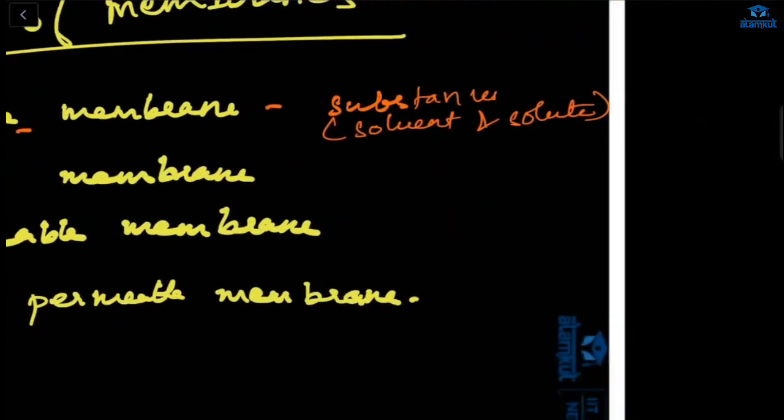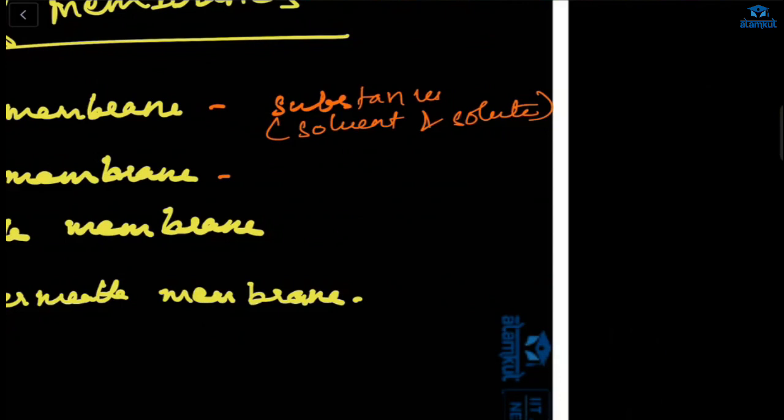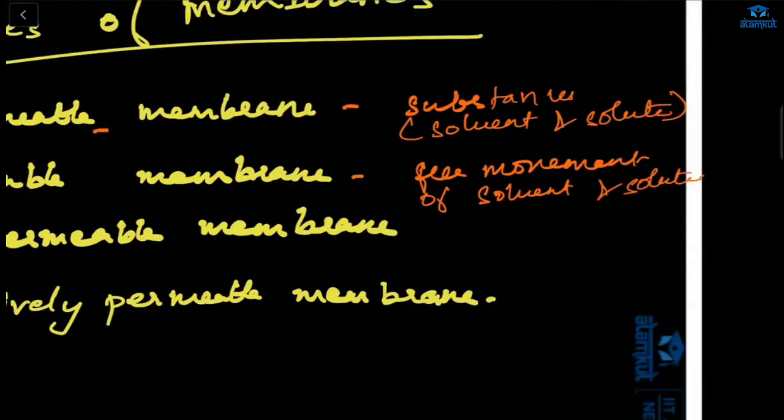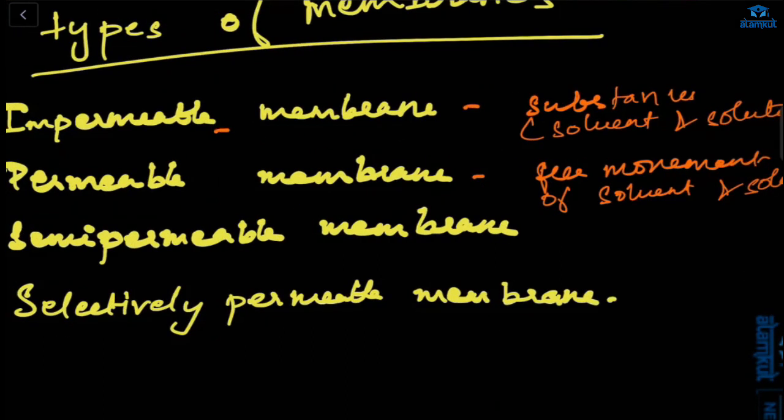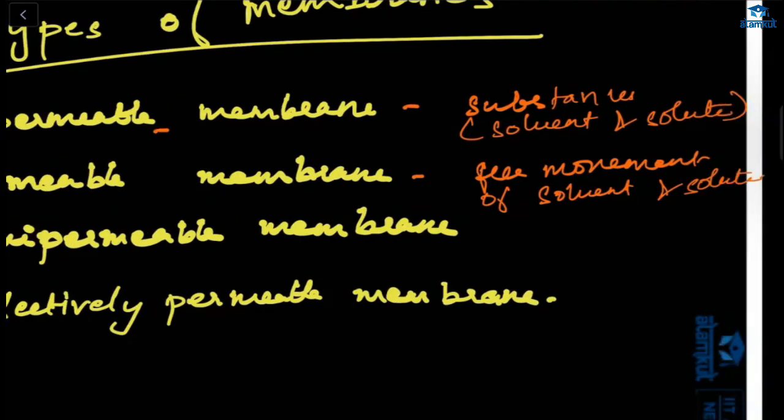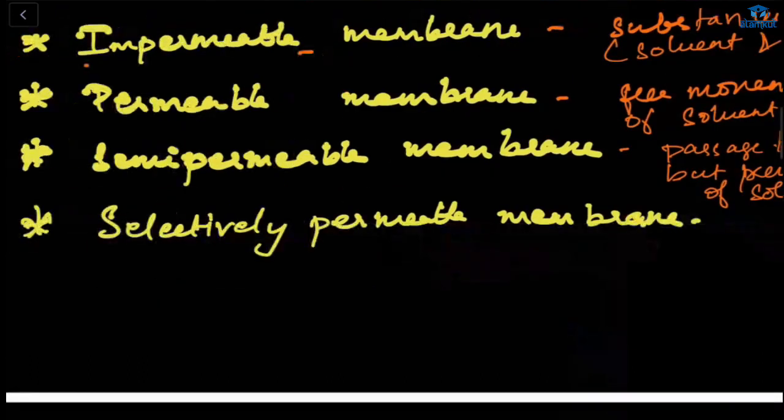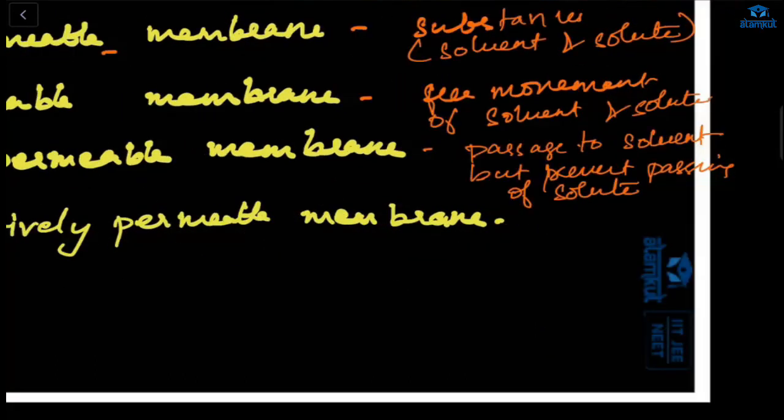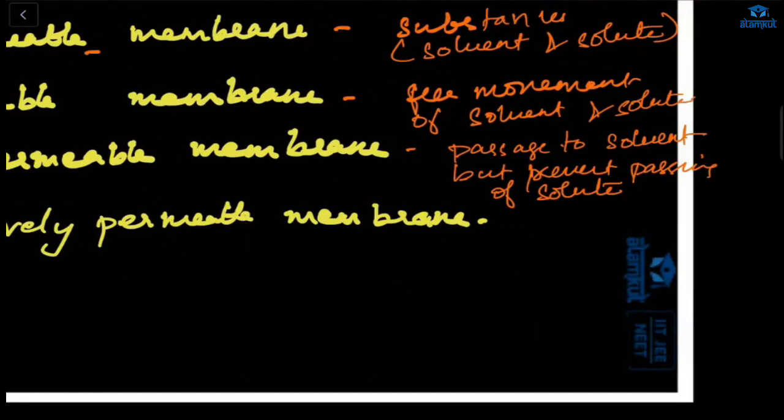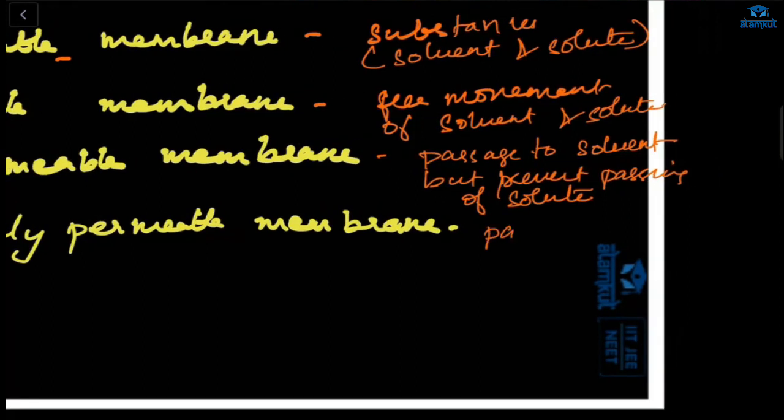In permeable membrane, there will be free passage, free movement of solvent and solute. Next, we have semi-permeable membrane. It will allow the passage of solvent, but it will prevent passing of the solute. Now we have selectively permeable. That means this membrane allows passage of solvent and few selected solutes.